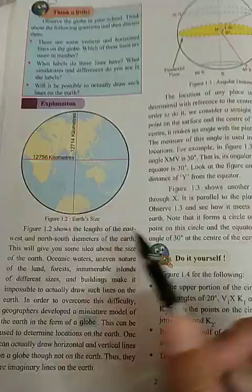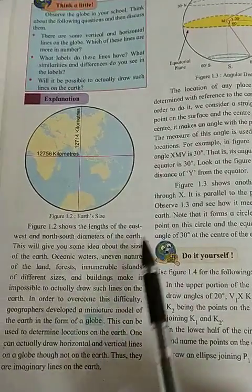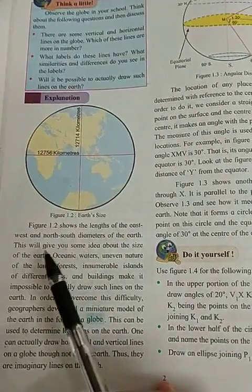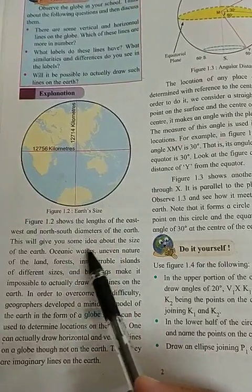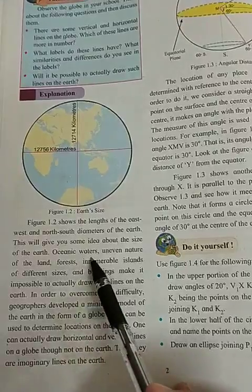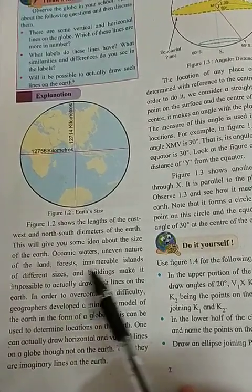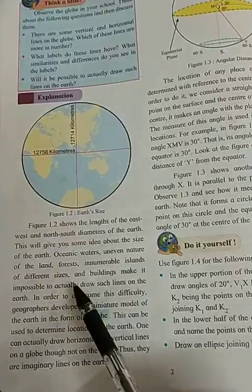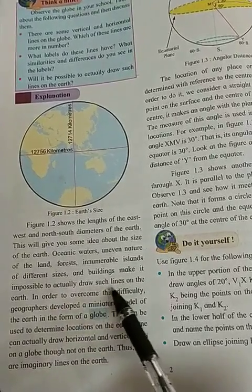See children, here is Figure 1.2 — Earth Size — showing the length of the east-west and north-south diameter of the earth. This will give you some idea about the size of the earth. Oceanic waters and the uneven nature of the land, forests, innumerable islands of different sizes and buildings make it impossible to actually draw such a line on the earth.